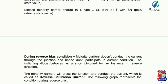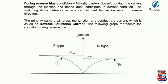The minority carriers will cross the junction and conduct the current, which is known as reverse saturation current. In reverse bias, majority charge carriers do not participate, but minority charge carriers do. The minority charge carriers in N-type are holes, and in P-type are electrons. When these minority charge carriers cross the junction and move, a very small amount of current flows — this current is called reverse saturation current. The graph shows the conditions near the junction during reverse bias.